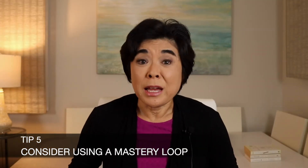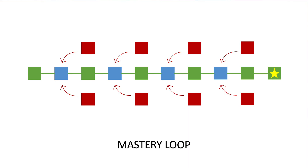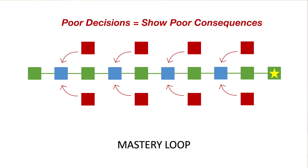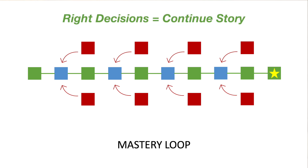Tip number five: consider using a mastery loop. Branching and bottlenecks can be complicated, so if you're new to branching scenarios or the business problem is relatively simple, a mastery loop may make sense. In a mastery loop, every time you make a poor decision you see the consequence play out, then automatically get to make that decision again. Once you make the right decision, the story continues — and there's really only one best ending. Some discourage mastery loops as overly controlling, but they're easy to build, maintain, and preferred by organizations that want to guarantee learners eventually make the right choice. They also work well for teaching brand new procedures by providing scaffolding.